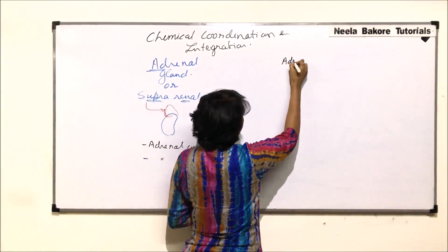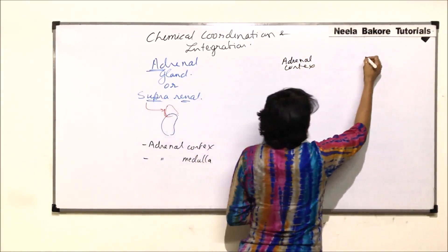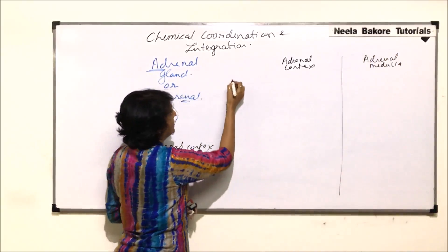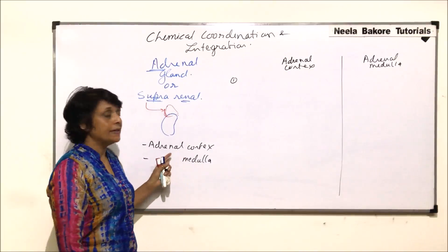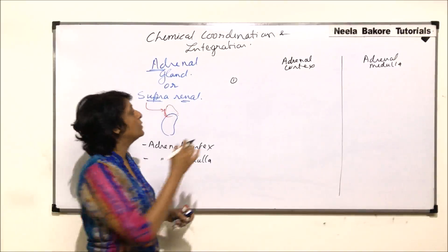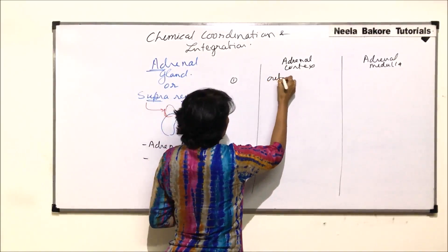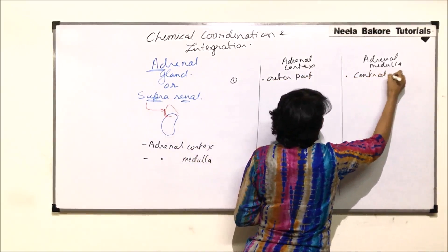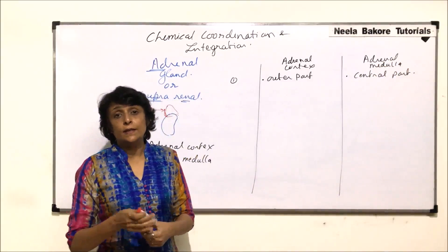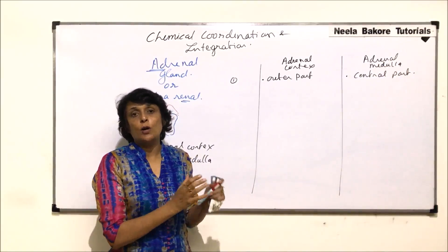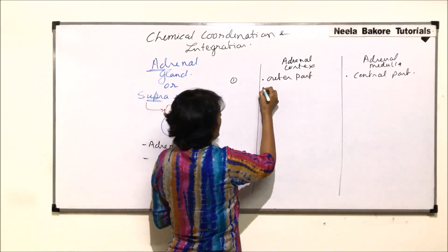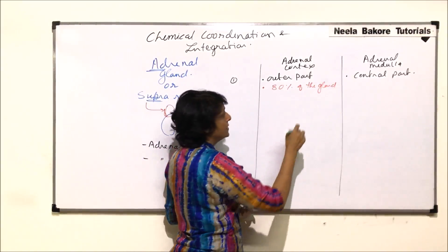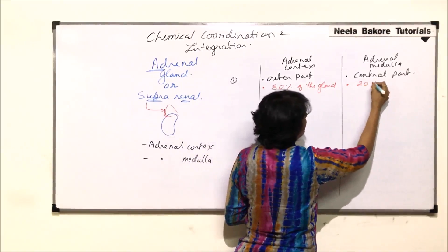Comparing adrenal cortex and adrenal medulla: in terms of location, the adrenal cortex makes the outer part of the gland, whereas the adrenal medulla makes the central part. Regarding proportion, the adrenal cortex makes up about 80% of the total gland, whereas the adrenal medulla makes up hardly 20%.